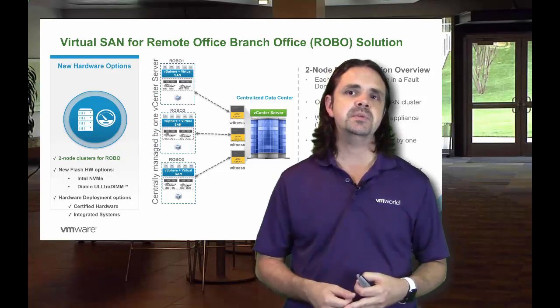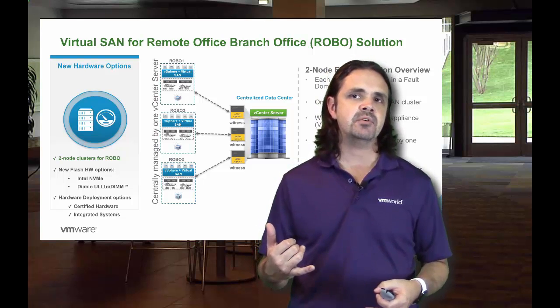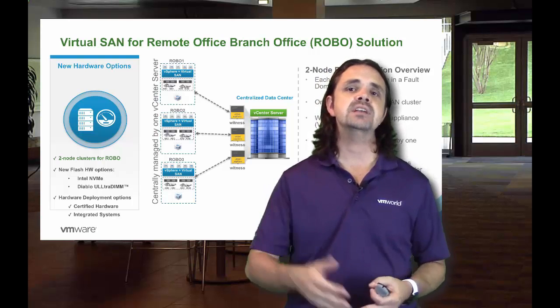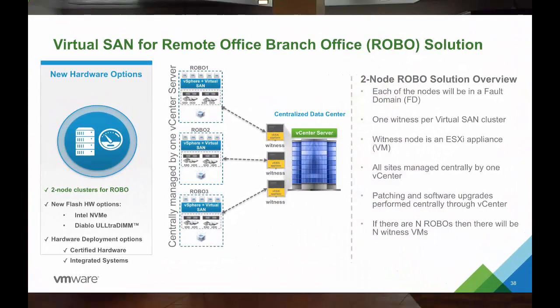Let's start at the beginning. We have inside of this example three remote or branch offices — let's just call them three remote data centers. Inside of those three remote data centers, we're leveraging vSphere ROBO and vSAN for ROBO, and with that we want to ensure that we can monitor them effectively. You can see that inside of this remote or branch office solution diagram for ROBO...